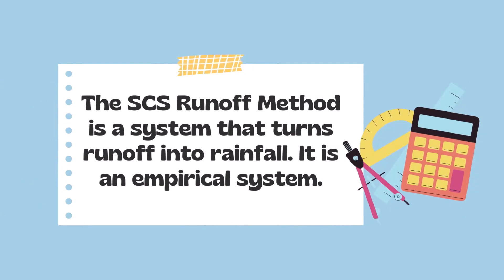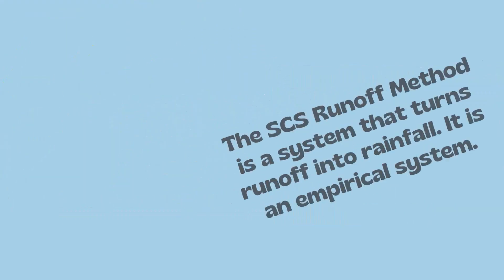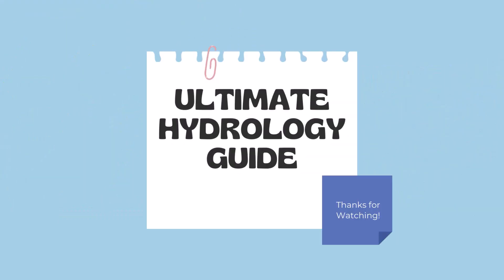So that's how to use the SCS runoff method. It's a system that turns runoff into rainfall, and it's also an empirical system based on the data given. We have a guide called the Ultimate Hydrology Guide, which breaks down the various methods such as the rational method, the SCS runoff method, and continuous simulation hydrology, to give you an idea of all these methods used in the industry and their strengths and weaknesses. I hope this video was useful — thank you so much for watching, and we'll see you next time.